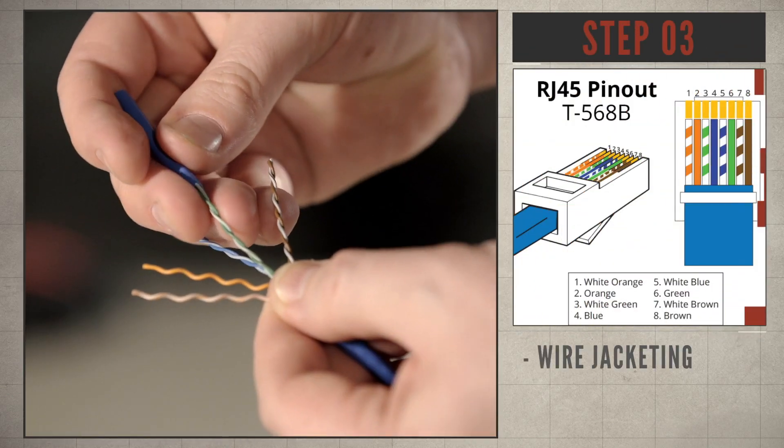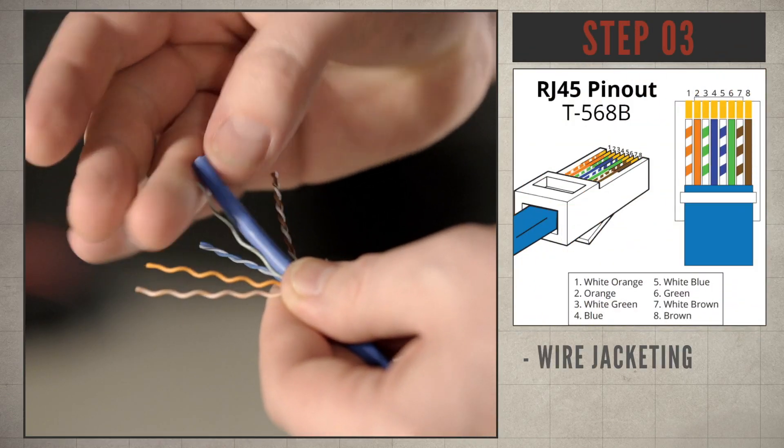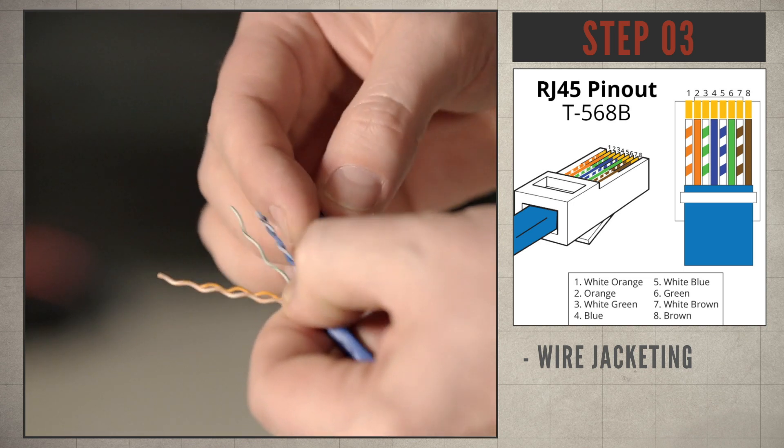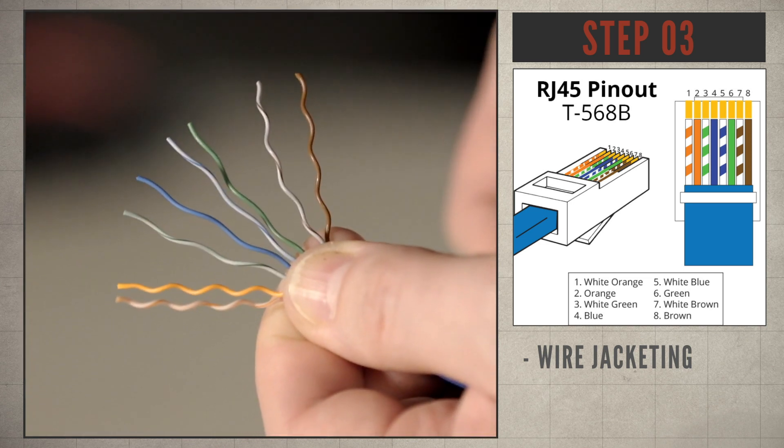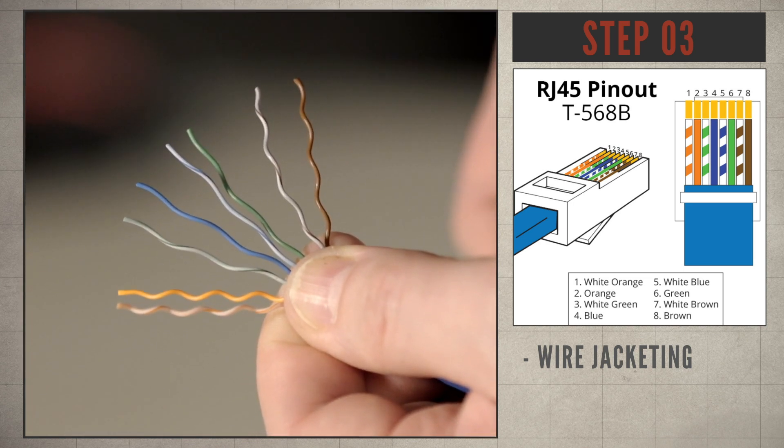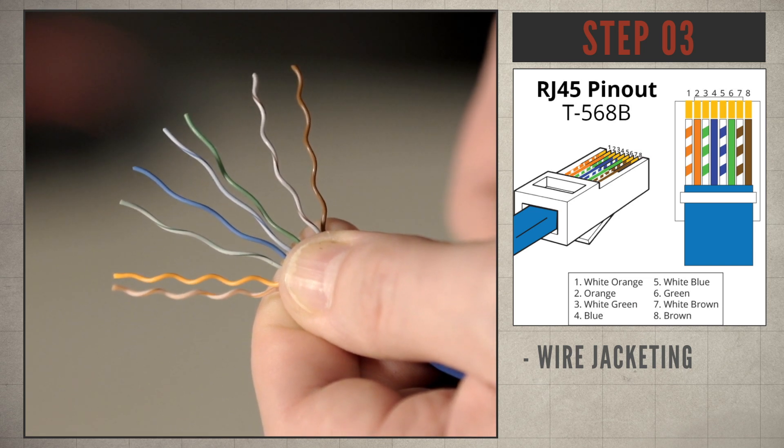Step 3, separate the pairs using the outer jacketing. Do this because it is faster and helps prevent damage. Start with the orange pair, then the blue pair, move to the green pair and finish with the brown pair.